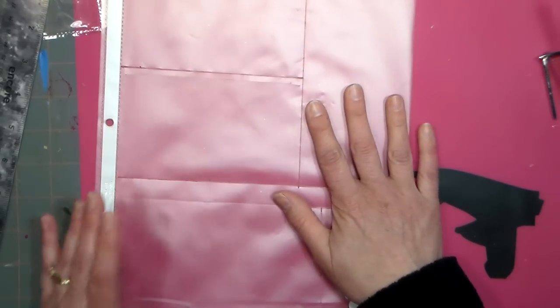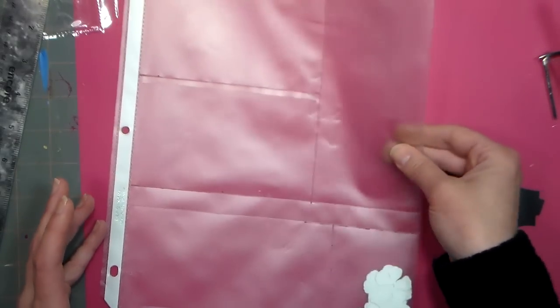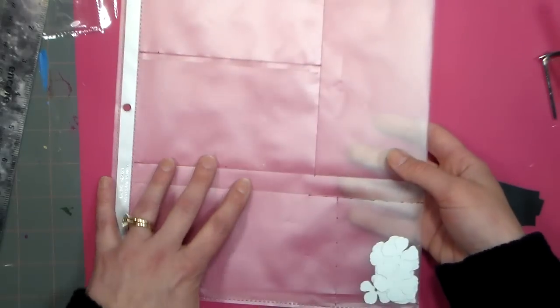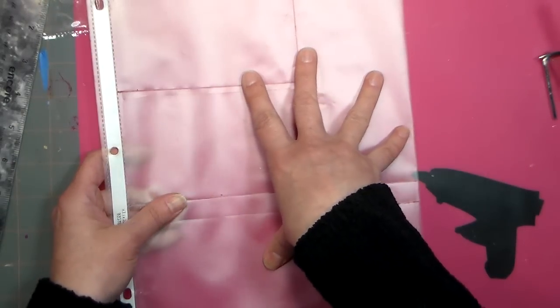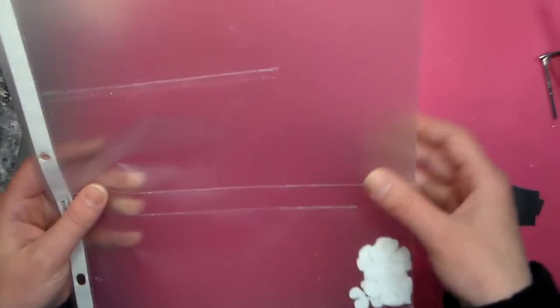These are super cheap. You can buy like a box of 100 of these for 20 bucks, whereas if you buy divided pockets for photos or for storing your rubber stamps, even if they're up at the office store, it's like five bucks for a five pack or something. So you can really save a lot of money doing this.